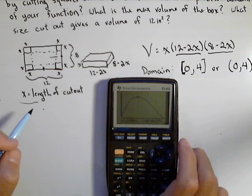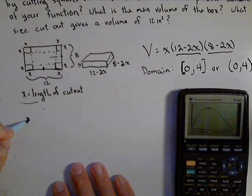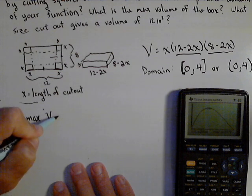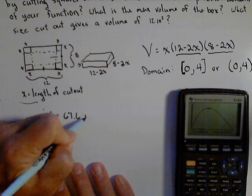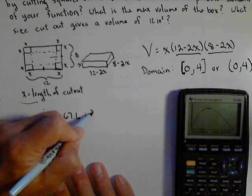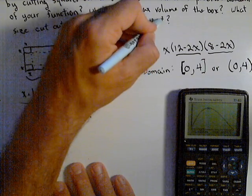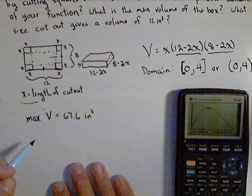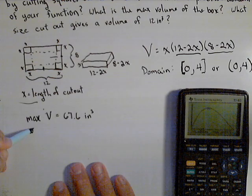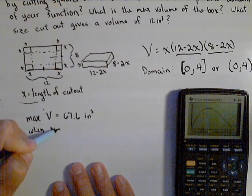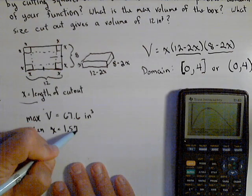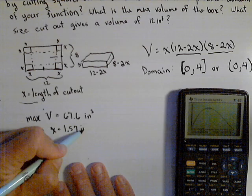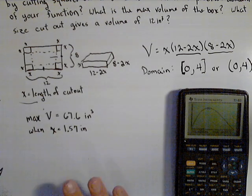And my maximum volume is, so the max volume is 67.63 cubic inches. It should have been 3 there. It's when our cutout is 1.5, let's just go to two decimals for right now, 7 inches.